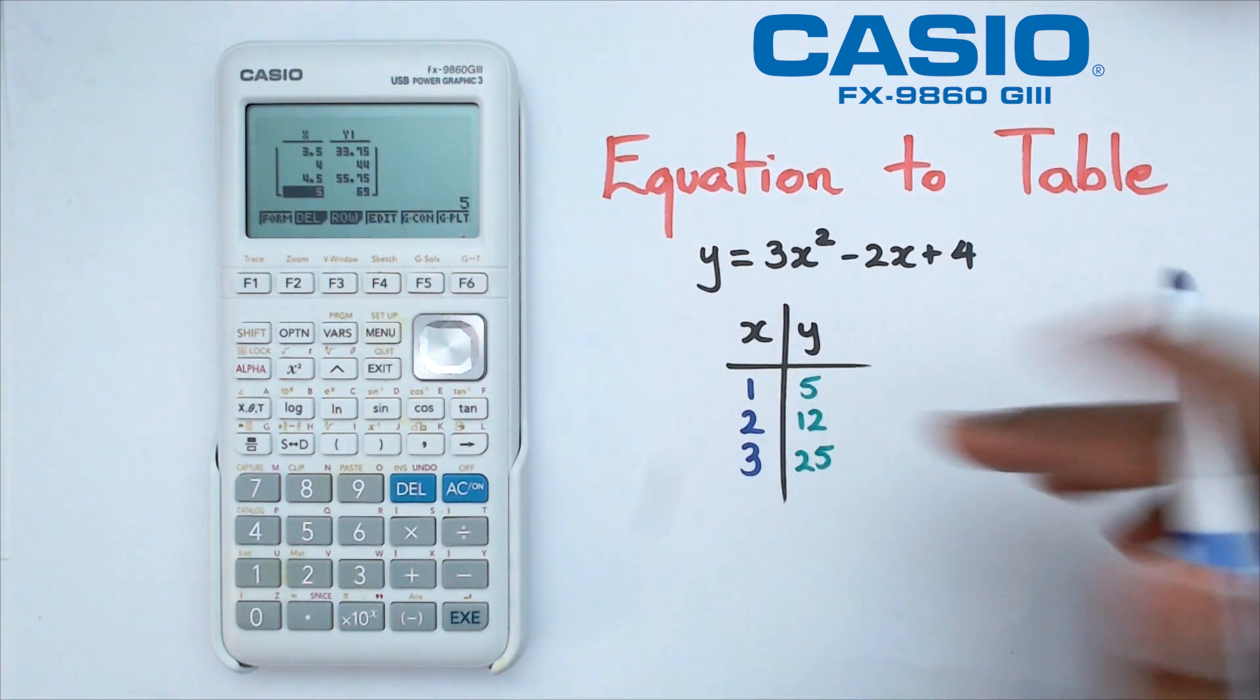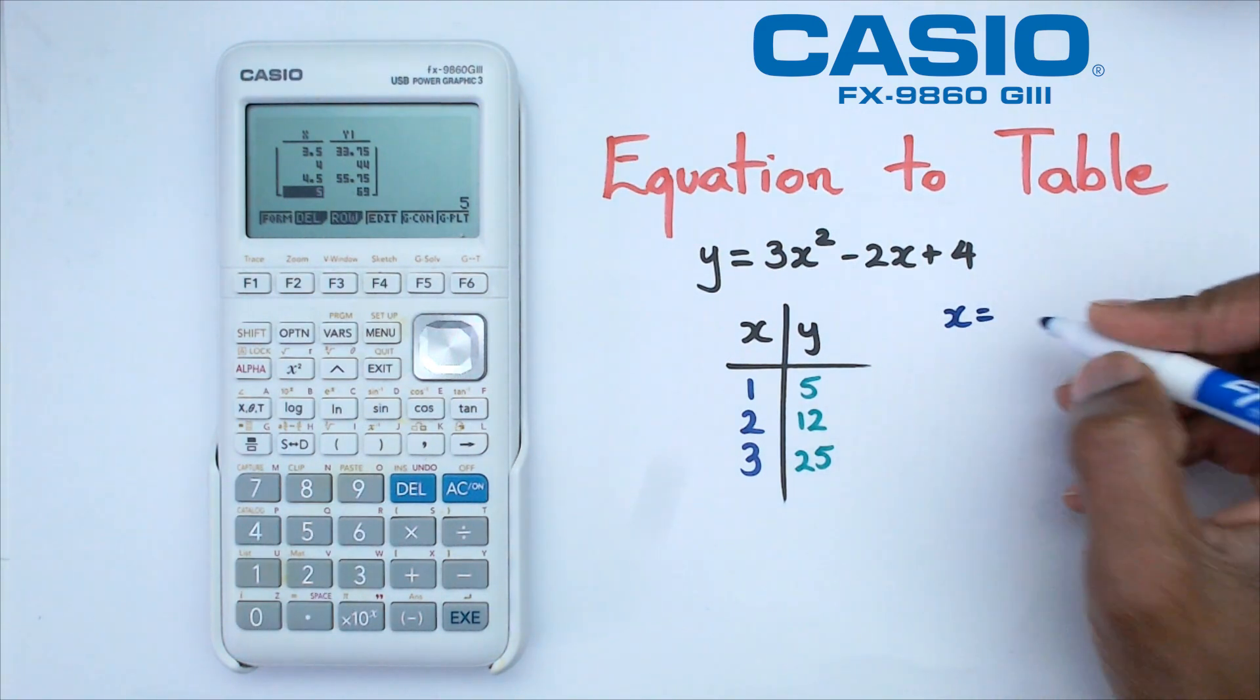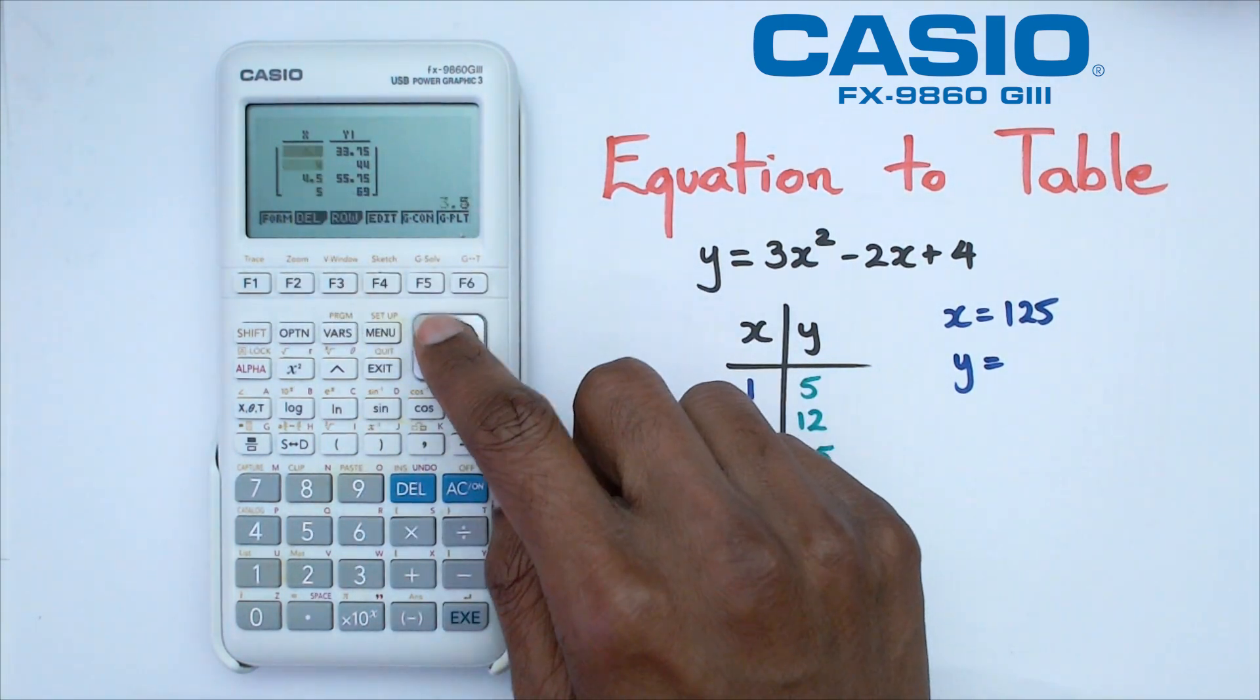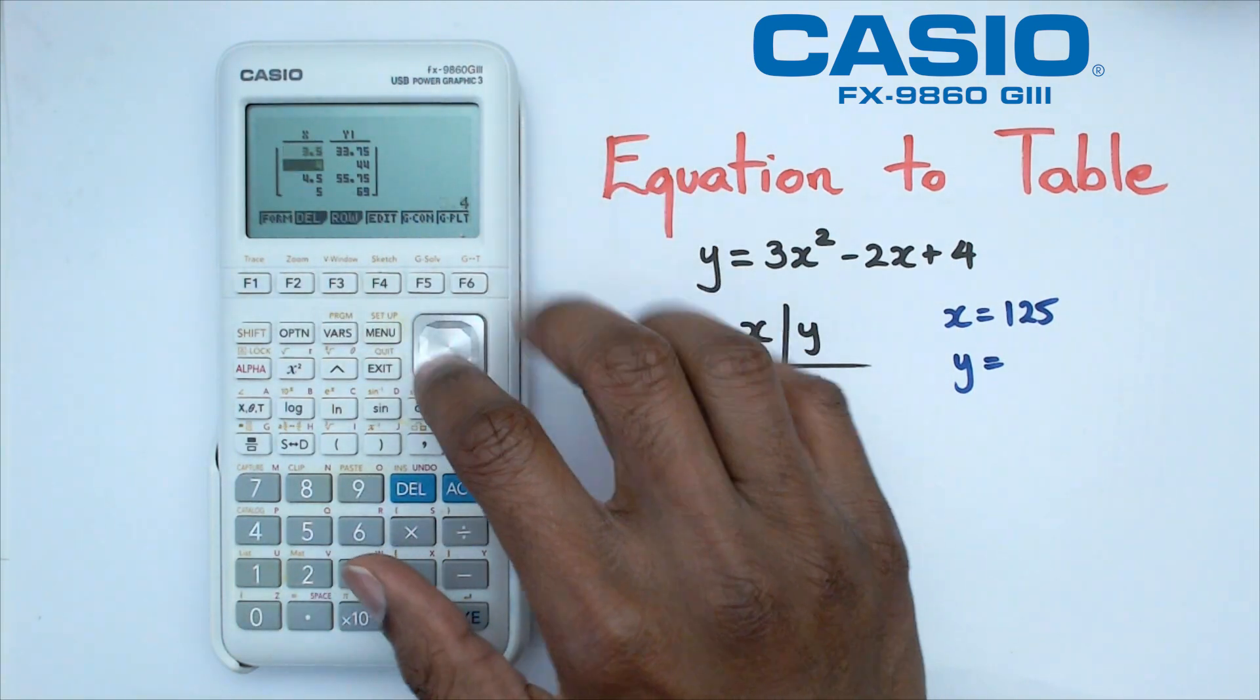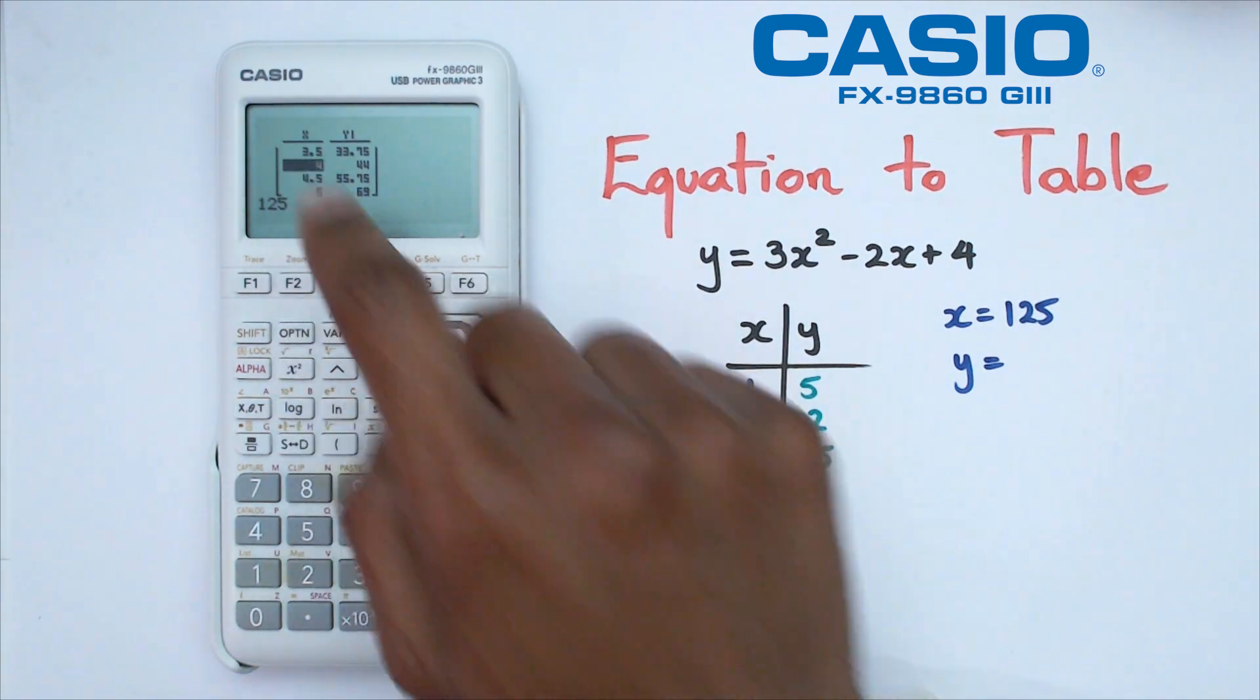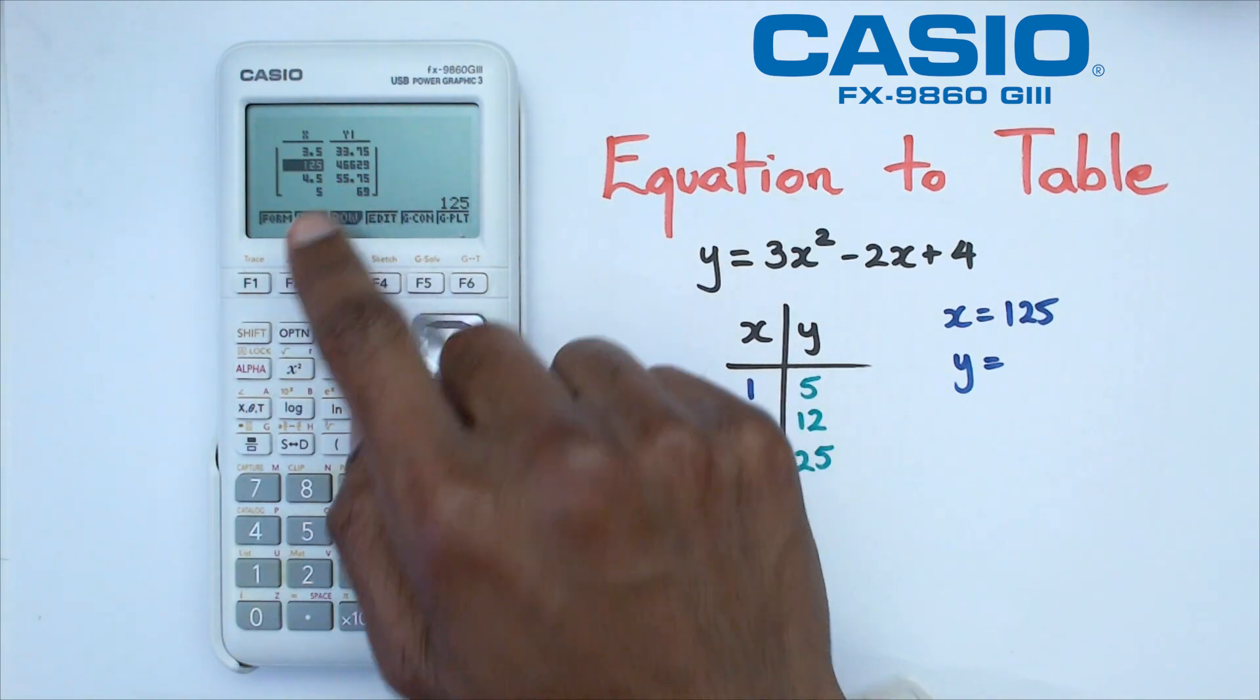Let's say we have this function here and we actually want to find out if x is equal to 125, what is y going to be. Even though we've got this table set up going from -5 to 5, the cool thing about this calculator is you should be able to just put in 125 anywhere you want and you should get the respective y values. We're going to put 125 instead of that 4 there, and as you can see that's going to give you your y value. When x equals 125, y is equal to 46,629.